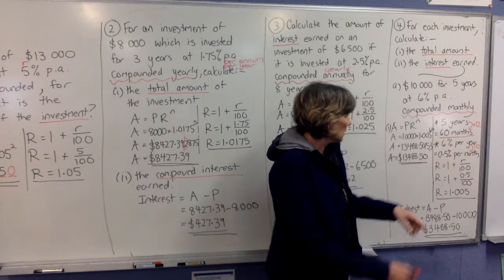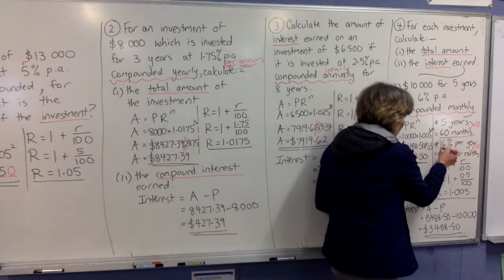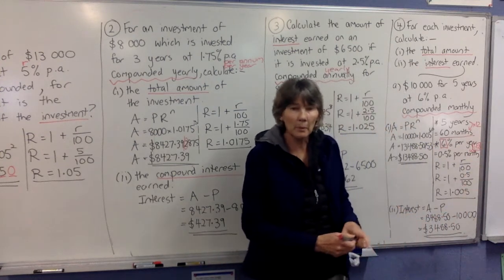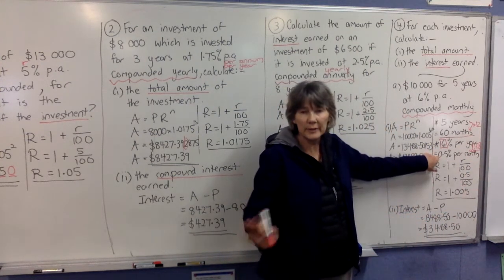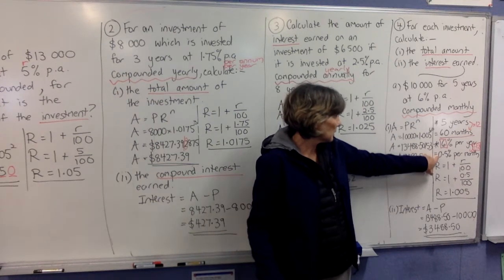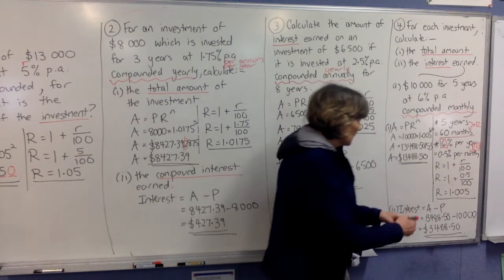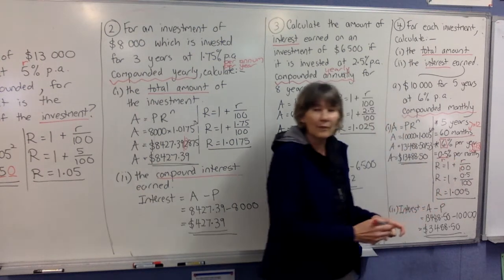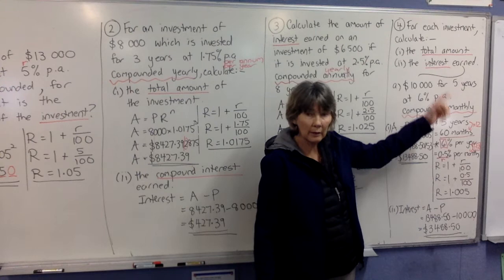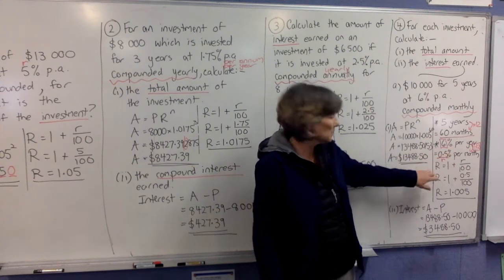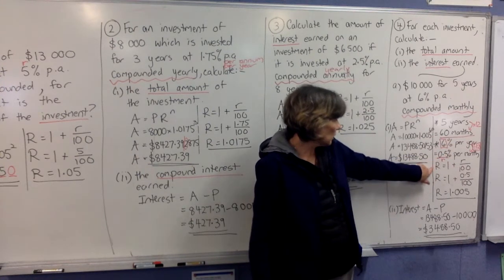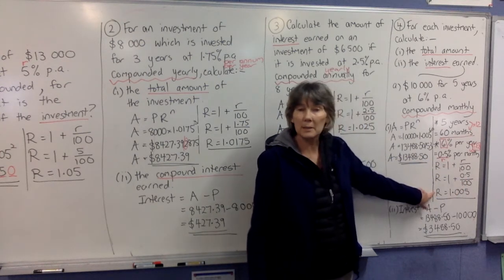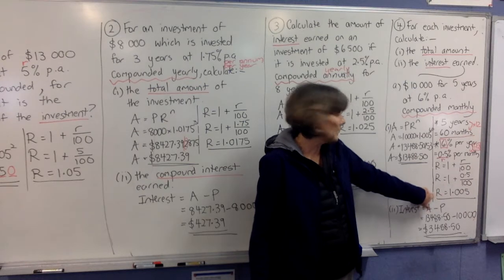And if you do 6 divided by 12, you will get 0.5. Always use decimals. So it's 0.5% per month. This is what you're going to use for your little R value now. Not the original thing. This one, because everything has to be in months. So we're going to use our little formula, put 0.5 in there, and this will be the decimal you end up with, 1.005.